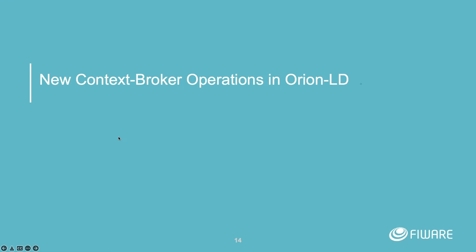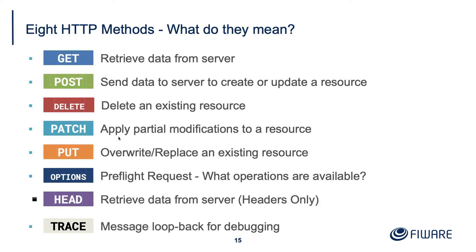Now on top of that there are some new operations in Orion LD. Again, some of these will be standardised into NGSI 1.6. As you probably realise, there are eight standard HTTP methods of which seven are usually reasonably supported — Trace is defined but very few people ever use it.